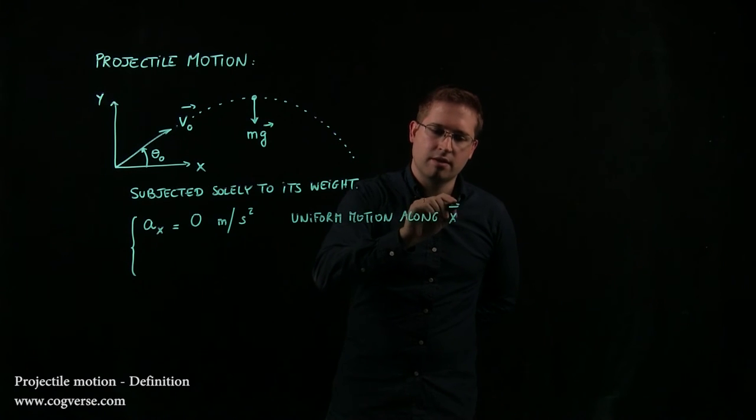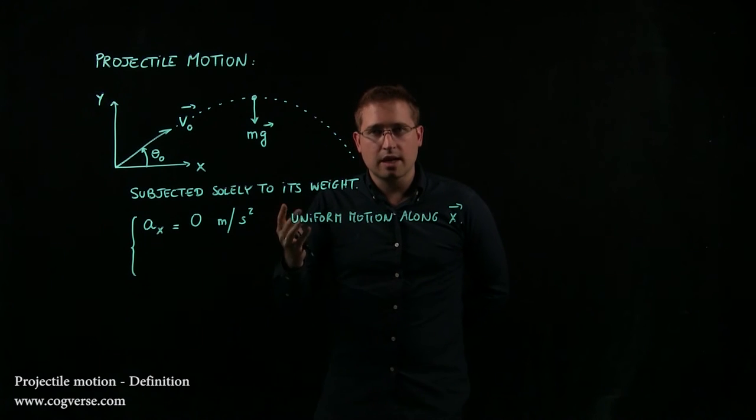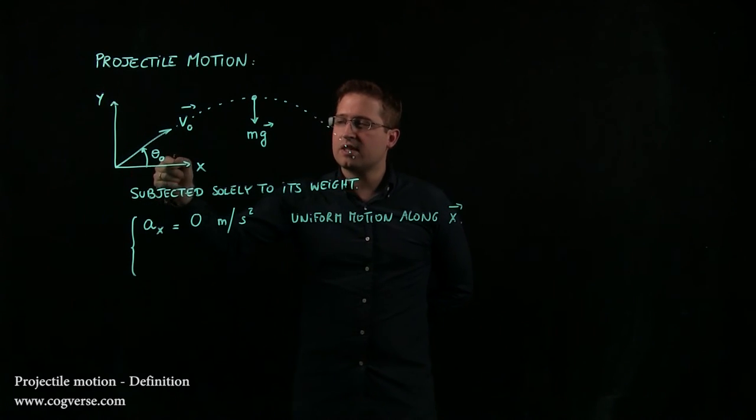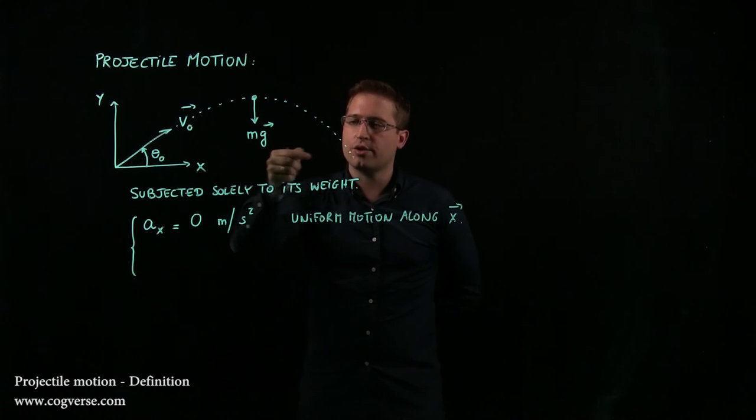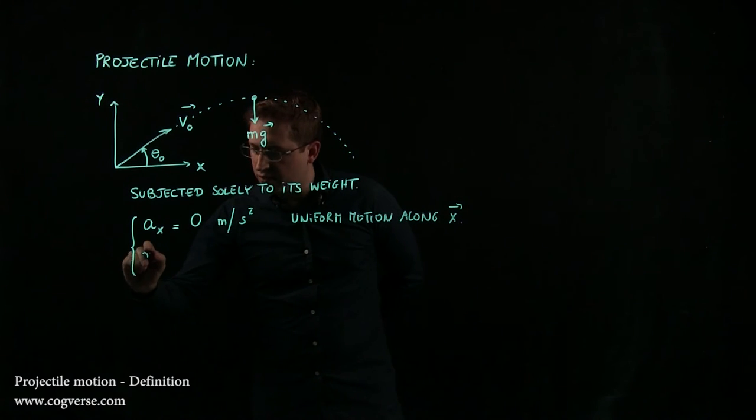So the speed of the golf ball horizontally stays constant throughout the entire flight. At any moment it stays the same, it doesn't go faster here and then slow down or the other way around. Horizontally that is. Vertically that's a different story.